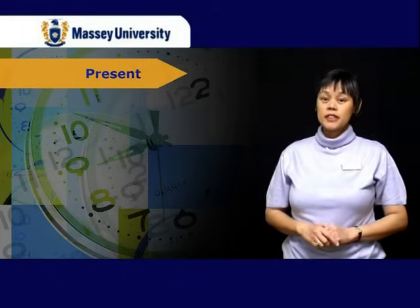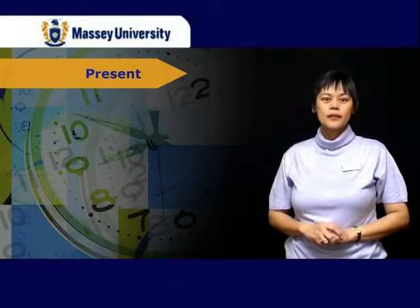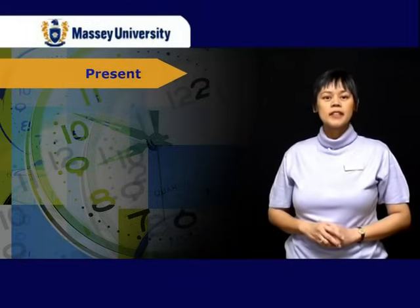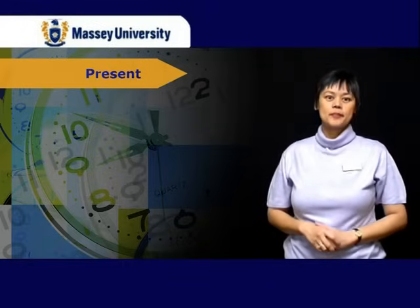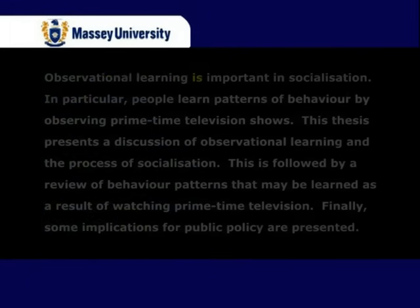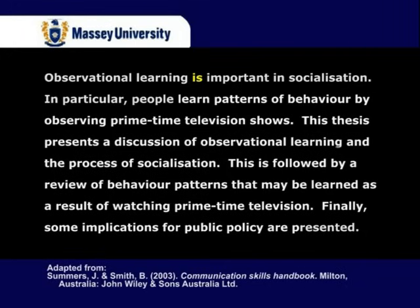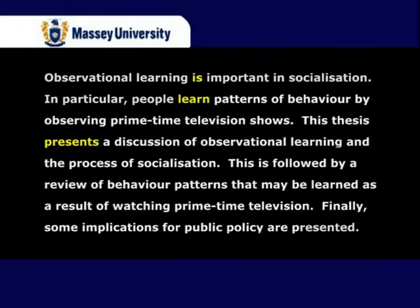Most academic writing is written in the present tense. This is used three times more than the past tense. We use the present tense to refer to actions and events that take place generally in the present, but not necessarily at the present moment or time. For example: 'Observational learning is important in socialization. In particular, people learn patterns of behavior by observing primetime television shows. This thesis presents a discussion of observational learning and the process of socialization. This is followed by a review of behavior patterns that may be learned as a result of watching primetime television. Finally, some implications for public policy are presented.'